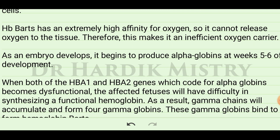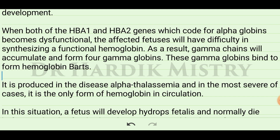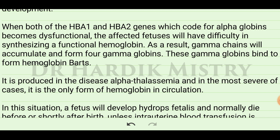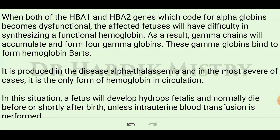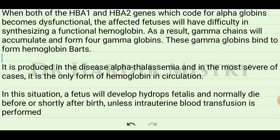As an embryo develops, it begins to produce alpha globins at weeks 5 to 6 of development. When both the HBA1 and HBA2 genes, which code for alpha globins, become dysfunctional, the affected fetus has difficulty synthesizing functional hemoglobin. As a result, gamma chains accumulate and form 4 gamma globulin chains. These gamma globins bind to form hemoglobin Barts, which is produced in the disease alpha thalassemia.